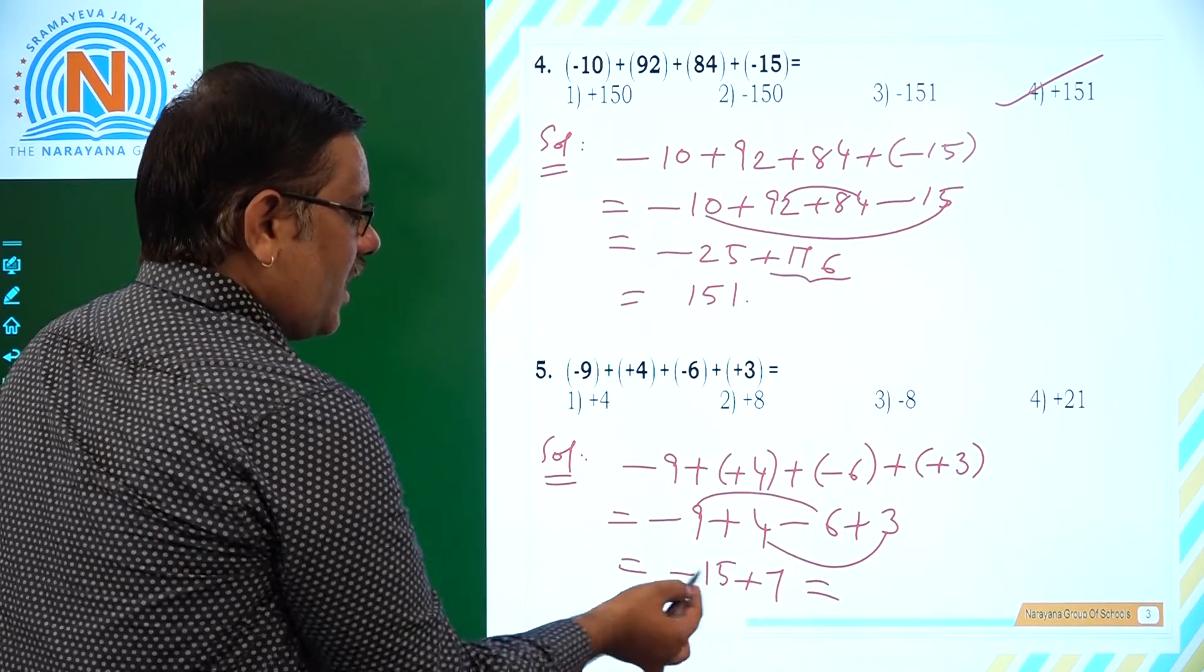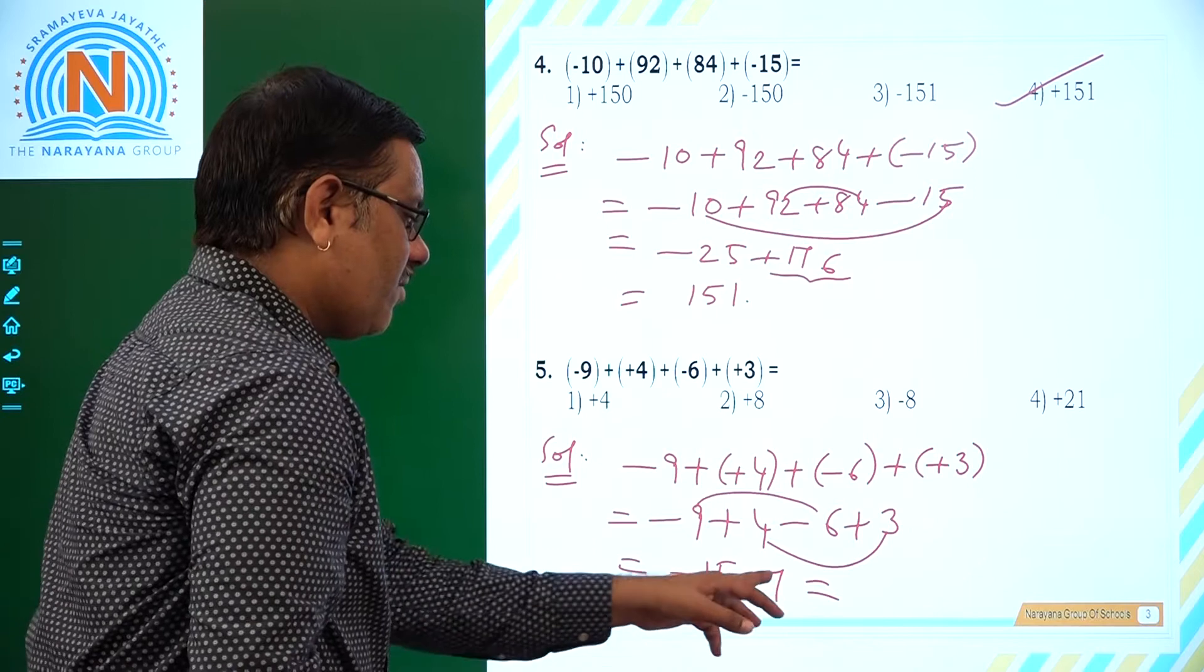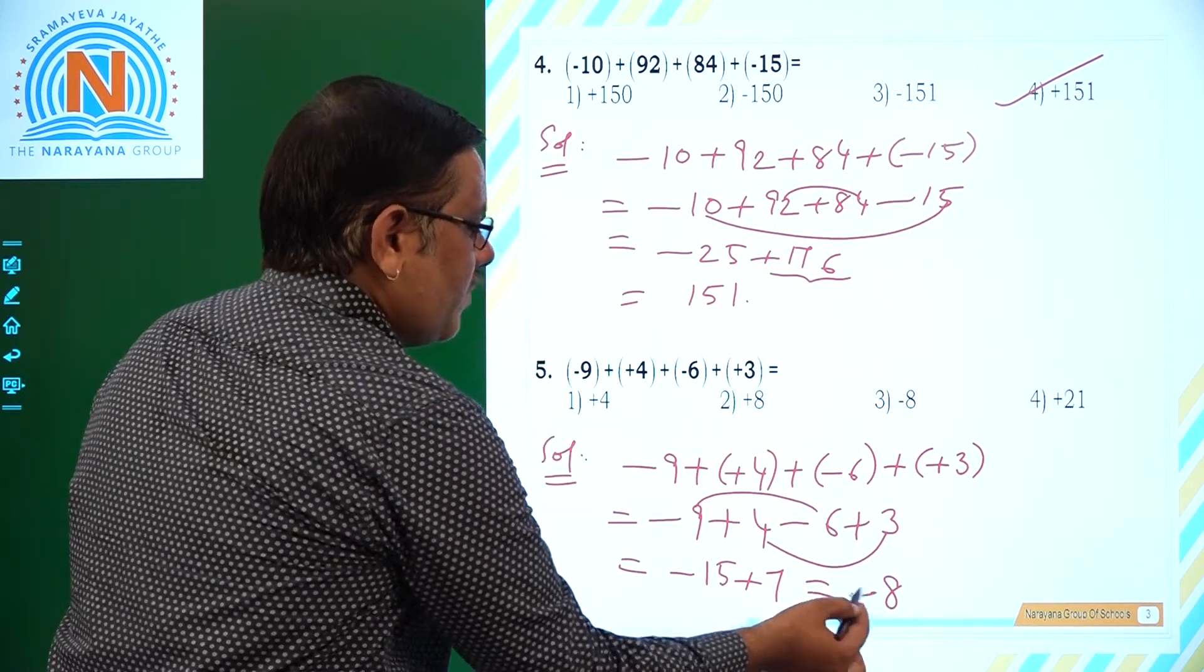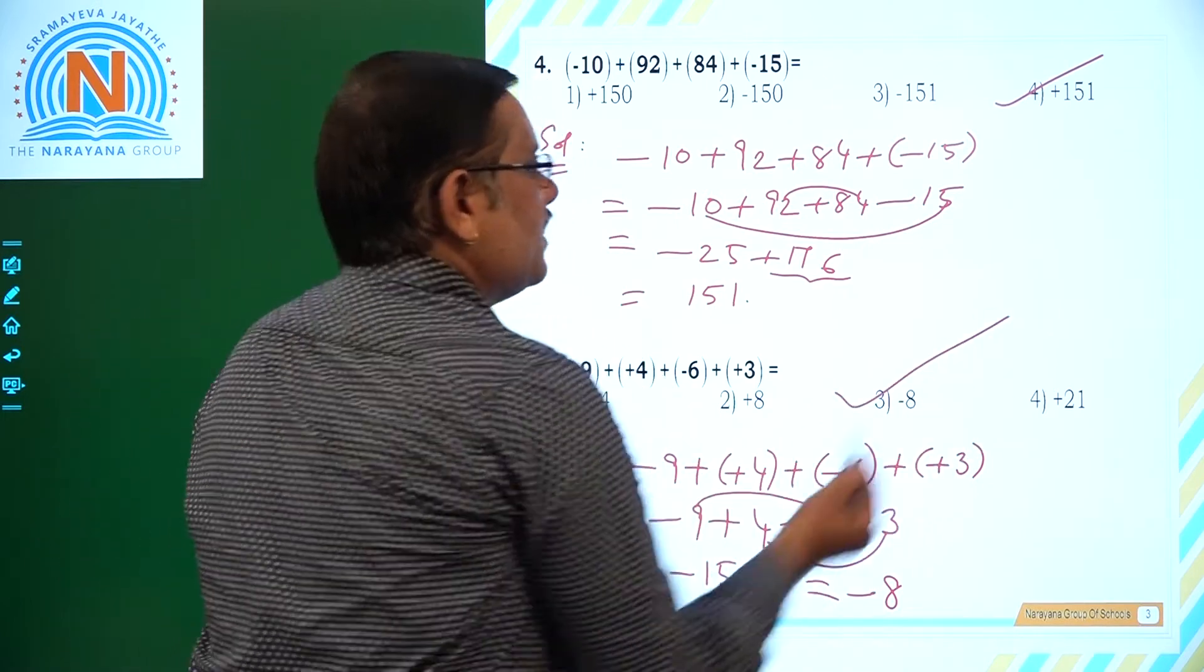Here it is minus and it is plus. Both have different signs. So subtract one from the other. 15 - 7 is 8. But 15 has negative sign. So, -8. So -8 means it is third option.